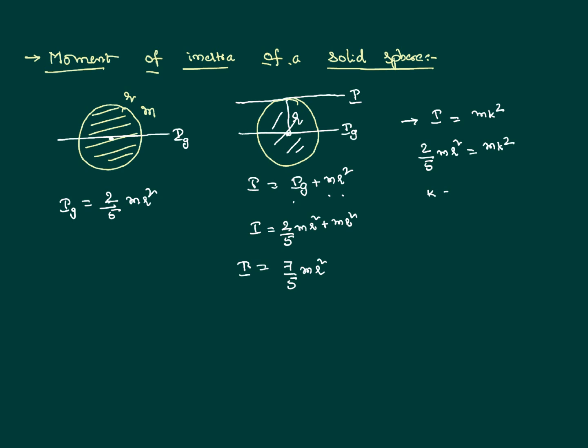Therefore, K equals the square root of 2/5, which equals the square root of 0.4 times the radius of the solid sphere. This simply means